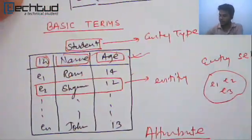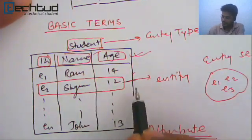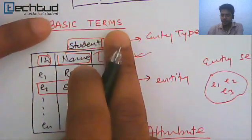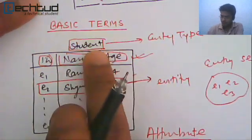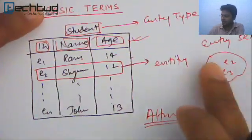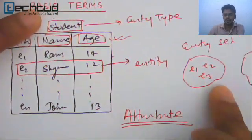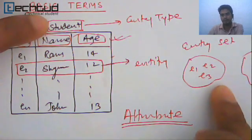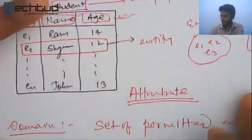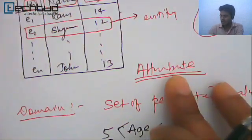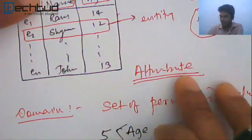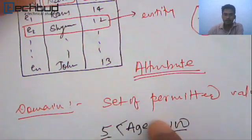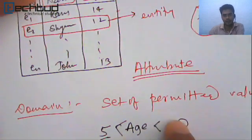We will revise everything now. Entity is an object with independent existence. Entity type is collection of entities with common attributes, and entity set is the collection of one or more entities where entity type itself is the superset of all entity sets. Attribute is the property that describes entity. Domain is the set of permitted values for a particular attribute.